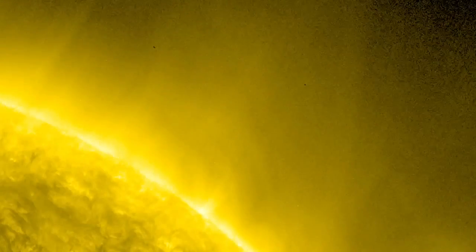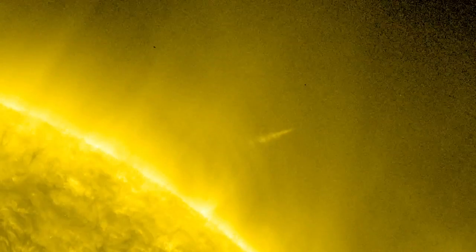Comet Lovejoy, which reached perihelion on December 15, 2011, is the best-known recent Kreutz group sungrazer, and so far it is the only one that NASA's solar-observing fleet has seen survive its trip around the Sun.